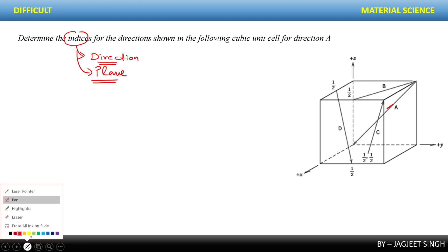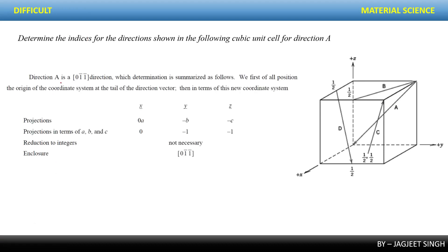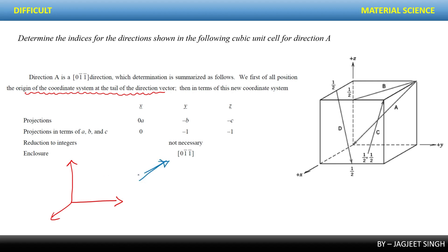Now I'll give you the process for how to calculate this. The answer for direction A is [0 1̄ 1̄]. The determination is summarized as follows: first, position the origin of the coordinate system at the tail of the direction. This is the most important point. Whatever vector or direction you are taking, you have to shift the coordinate system so that its tail passes through the origin.